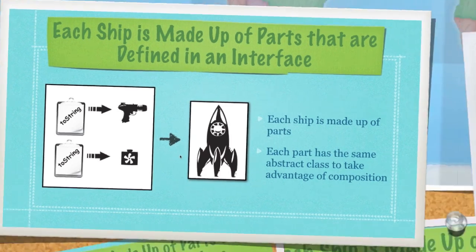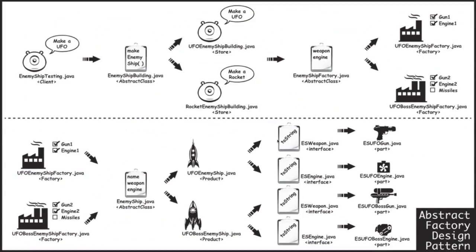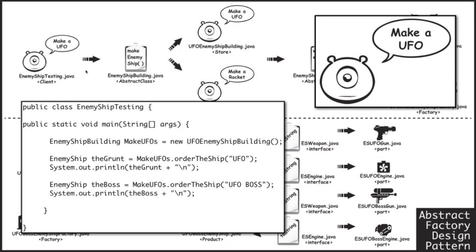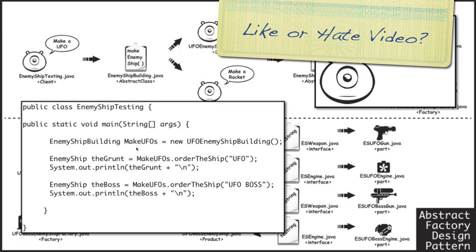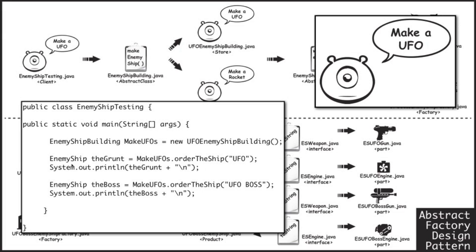Let's look at this in a code-related way. There you have the whole abstract class, and all the code is available underneath this video. Our alien comes in and says 'I want you to make me a ship.' Enemy ship building is going to handle orders for new enemy ships, and you send it code using the order the ship method — it basically sends the order to the right factory for the creation of said ship. Here we're defining a basic enemy ship and giving them names. Then make UFOs, which is enemy ship building, is going to pass over the string UFO and the string UFO boss.